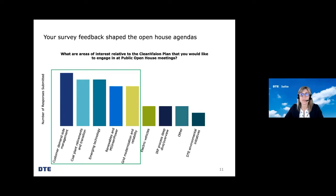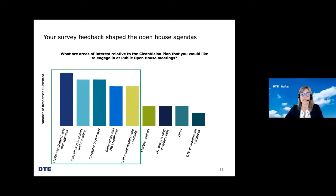At our first public open house in January, we polled the audience for feedback on what aspects of the Clean Vision Plan they wanted to hear more about. As you can see on the chart on page 11, areas with higher responses are highlighted in the green box on the left side of the chart. Based on this feedback, we talked about renewables and emerging technology at the February open house. At last month's open house, we discussed customer demand-side management programs like energy efficiency and demand response, as well as the My Green Power voluntary renewable energy program. Please visit DTECleanEnergy.com to watch recordings, read transcripts, or view presentations.